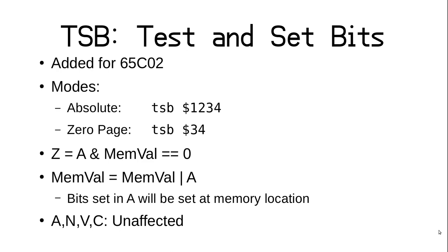Also added for the 65C02 was TSB, or Test and Set Bit. It works the same as TRB, except that it does an effective OR between the memory value and A, and stores that at the operand address. This means that whatever bits are set in A will also be set at that location in memory. Of course, it still does an AND to determine the Z bit state, but does not change the accumulator or any of the other status bits. This would also take quite a few instructions to accomplish with the original 6502.